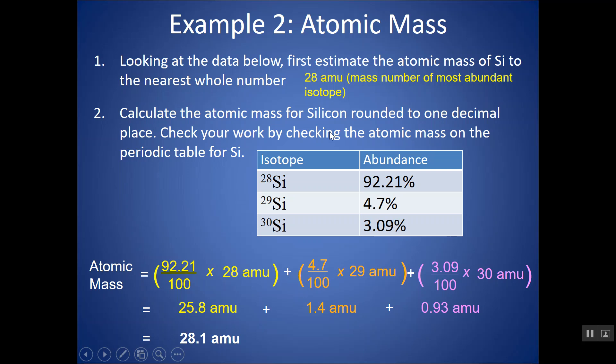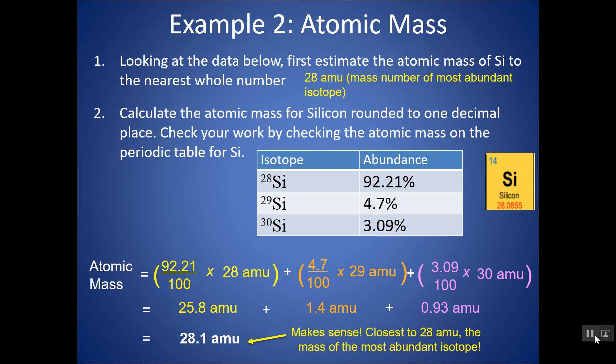And I get 28.1, which is what I estimated it to be. It makes sense. It's closest to 28, which is the mass number or the mass of the most abundant isotope. And if I look on my periodic table, I see that I am correct. This might have some more significant figures, some more decimal places, but this is 28.1. Here we go.